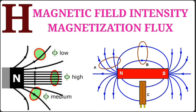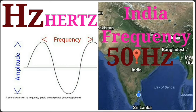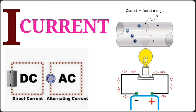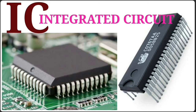HF – High Frequency. Hz – Hertz. I – Current. I – Instantaneous Current. IC – Integrated Circuit. IR – Infrared.